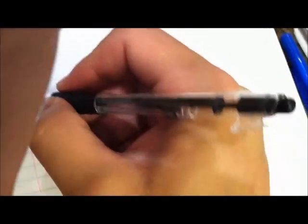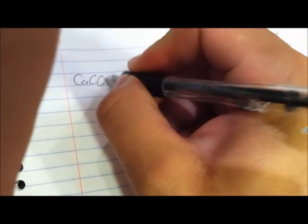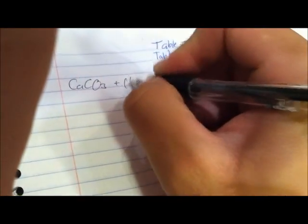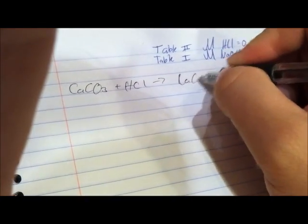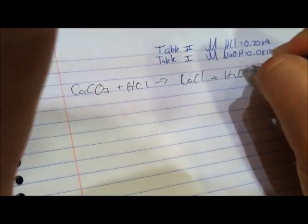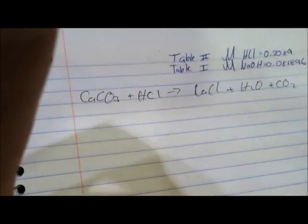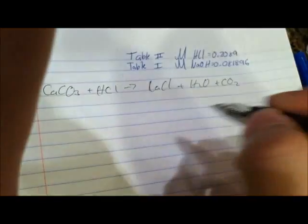So the first question was write a balanced equation, which you guys should know how to do real quick. It's just calcium carbonate plus hydrochloric acid gives you calcium chloride plus H2O plus CO2. That's question number one.